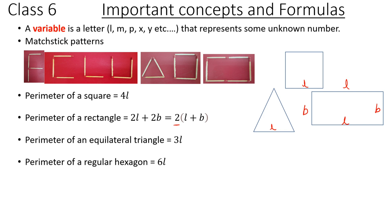Perimeter of a regular hexagon. Hexagon means six sides, and regular means that all the sides are of equal length and all the angles are of equal measure. So six sides and the side length is L, giving the formula 6L.